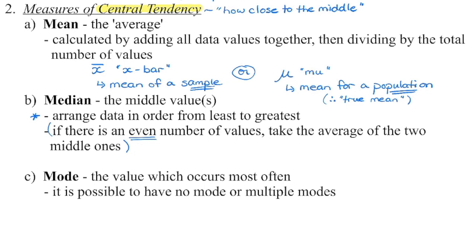Median is the value in the middle, so we have to put the numbers in order, usually from least to greatest, and then count what is that middle value. Mean is the average — we add everything together and divide by the total number of values.